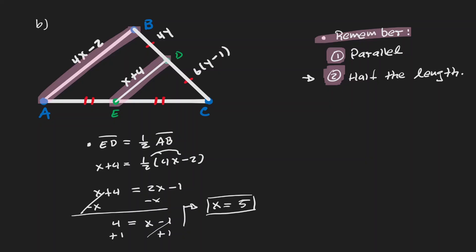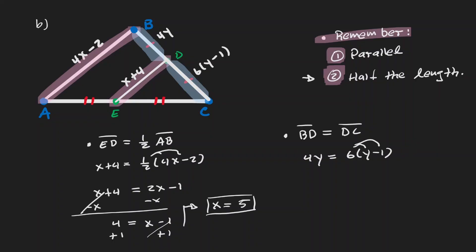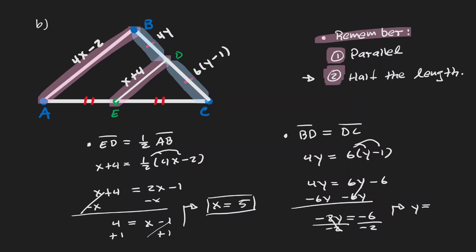Notice that in this case we're not just solving for x — we also need to solve for y. Since D is the midpoint, we know that BD is congruent to DC, as shown in the diagram. Setting those expressions equal: 4y equals 6y minus 1. Distributing, we get 6y minus 6 on the right. Subtracting 6y from both sides gives negative 2y equals negative 6, and dividing by negative 2 gives us y equals 3.